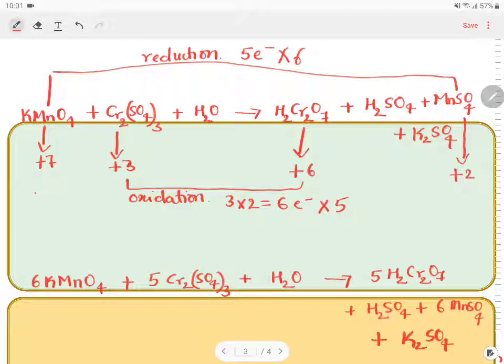Now in this equation, we have balanced 2 elements. That is 6 Mn and 6 Mn and 5 H2SO4. 10 Cr and 10 Cr. Remaining elements, we need to balance it.